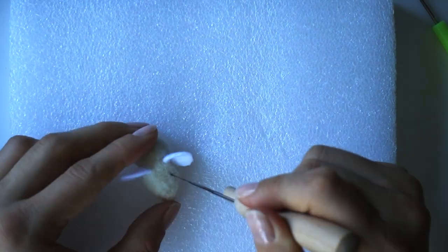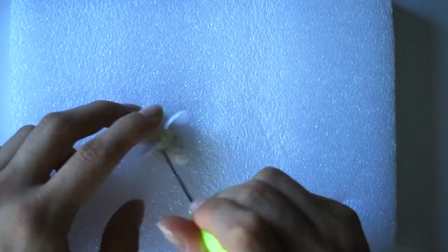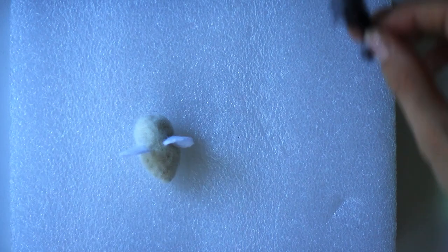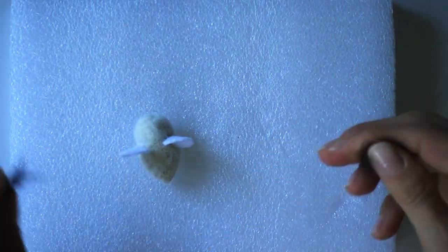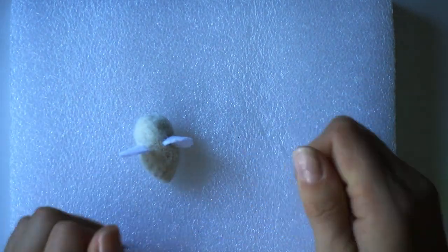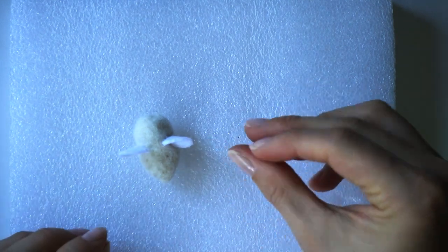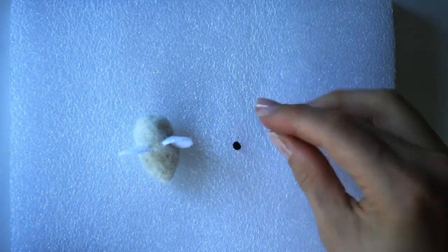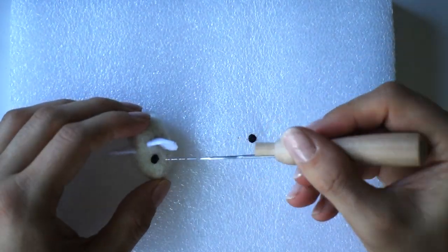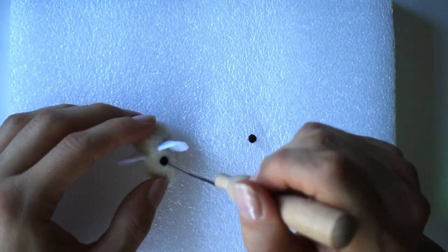Now I'm going to add the eyes. With the needle I'm marking where I want the eyes to be. I'm taking a tiny amount of black wool and rolling it into little balls. I'm taking the eye on the needle and stabbing it lightly where I created the eye holes.